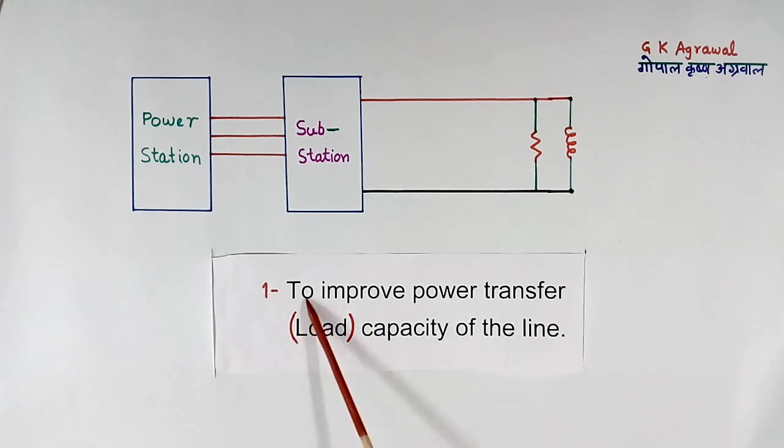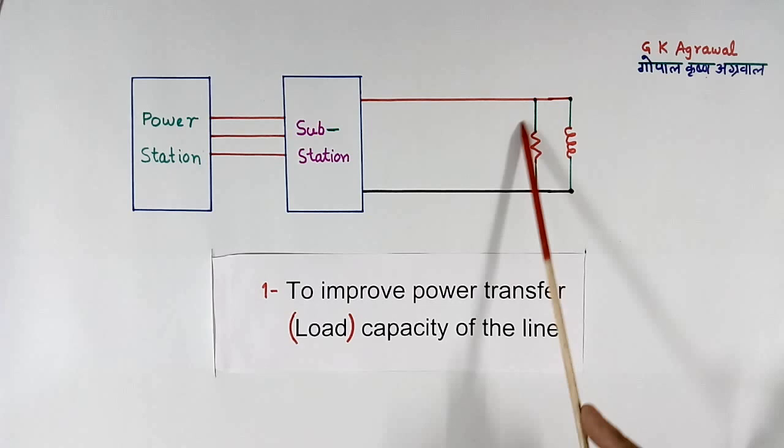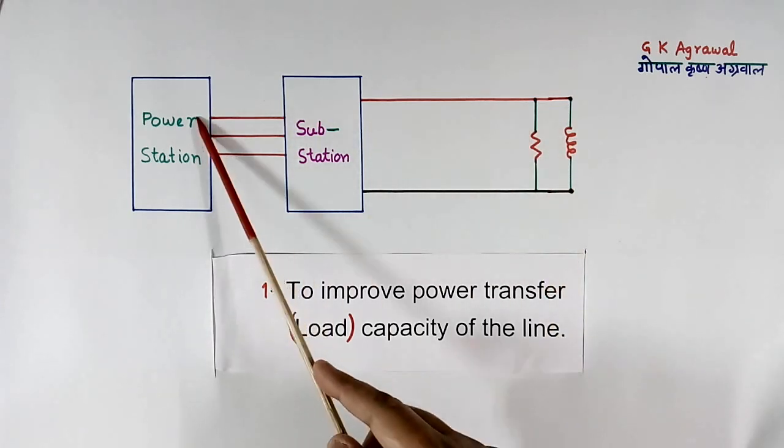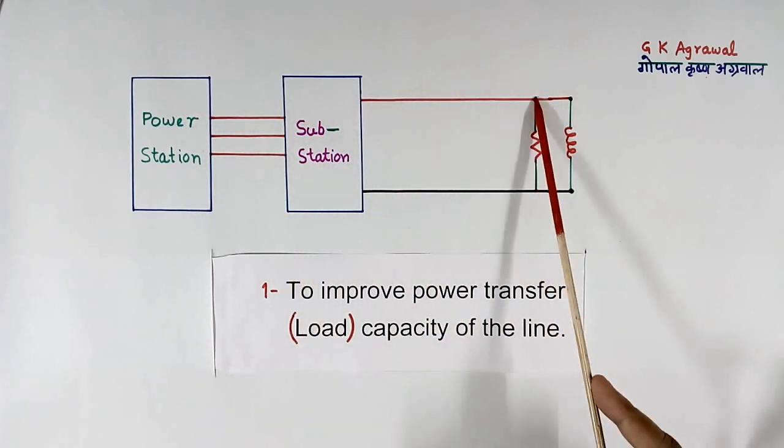This is first one: To improve power transfer capacity of the line. Power transfer capacity can be called as load capacity also. You see when we connect a load, current flows in this full line from here to here.